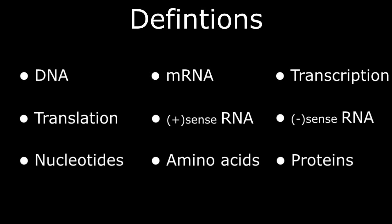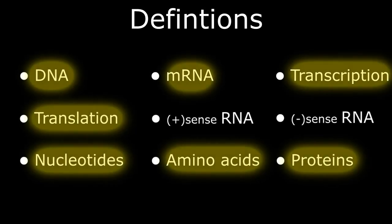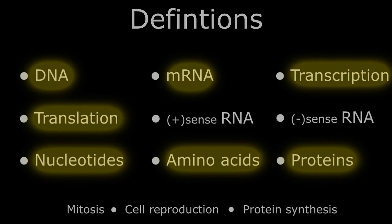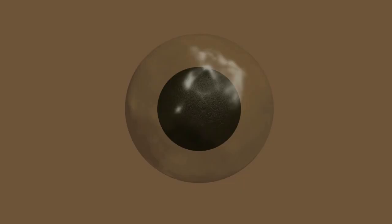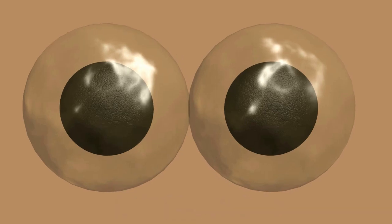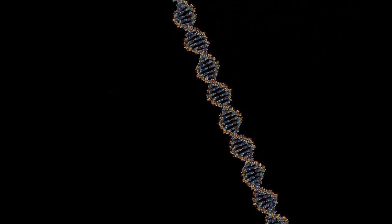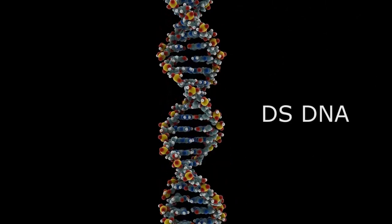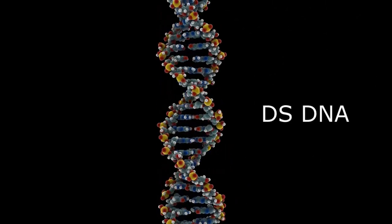Of these nine definitions, seven of them are directly related to mitosis, cell reproduction, and protein synthesis in our own bodies, which we will now review. In the human body, a parent cell divides into two daughter cells, splitting the cytoplasm and nuclear material equally between the daughters. The critical genetic material or template for each and every one of us is encoded in the double-stranded DNA within the nucleus of the cell.